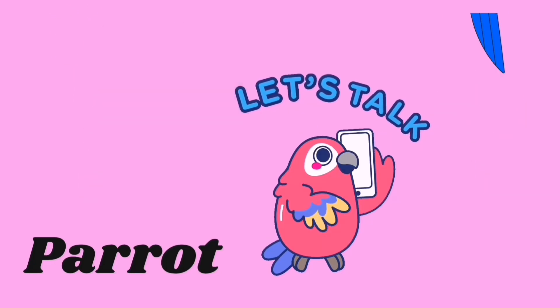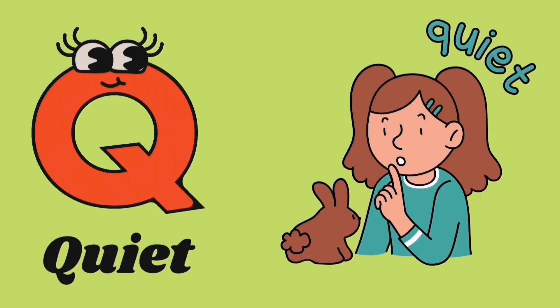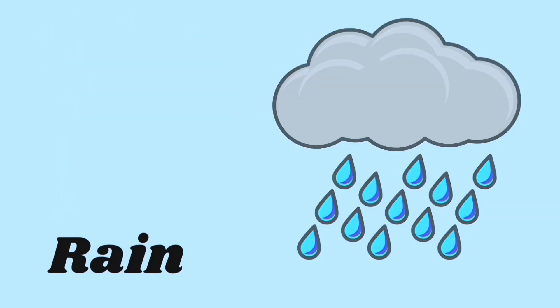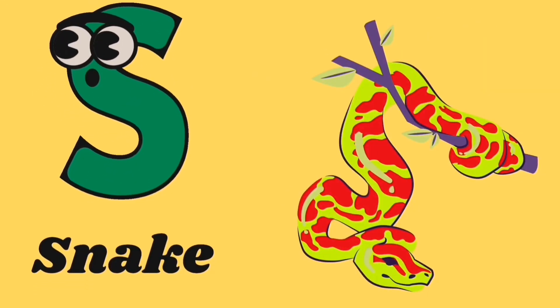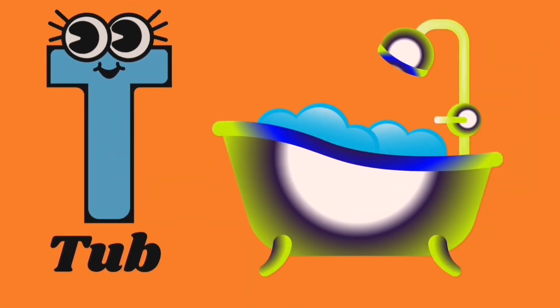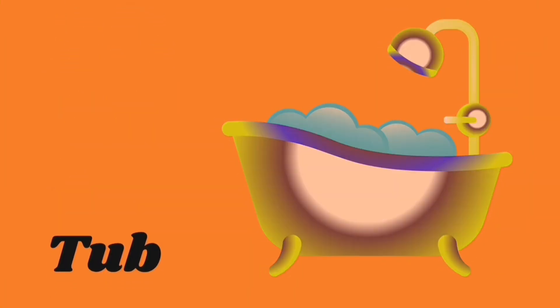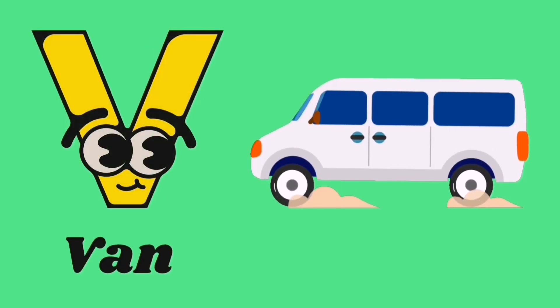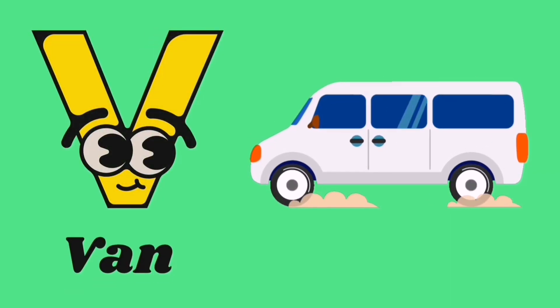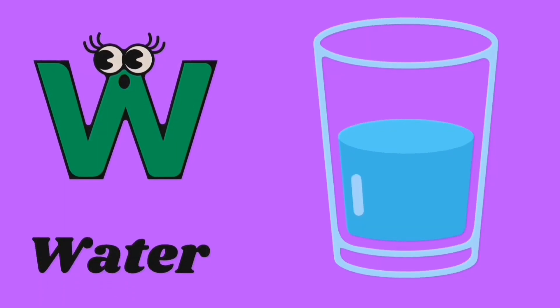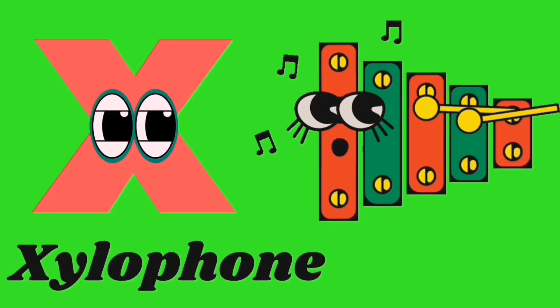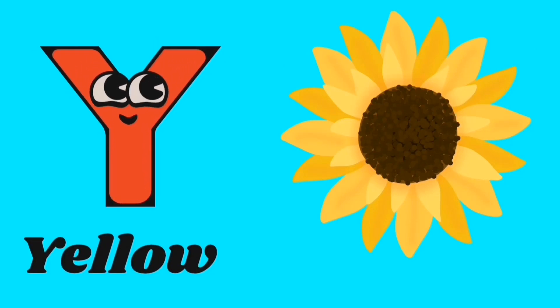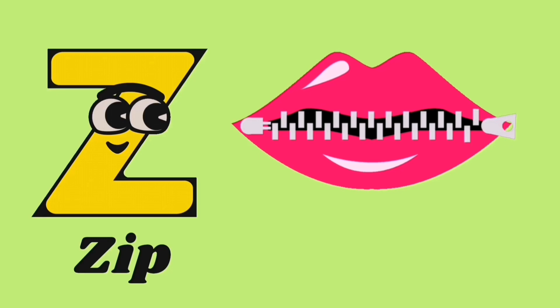Q for quiet, R for rain, S for snake, T for tub, U for umbrella, V for van, W for water, X for xylophone, Y for yellow, Z for zip.